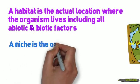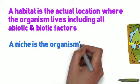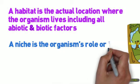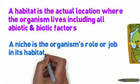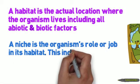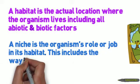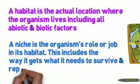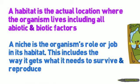A niche is different from a habitat. A niche is the organism's role or job within its habitat. This includes the way it gets what it needs to survive and reproduce, like how it gets its food, how it gets away from predators, or how it reproduces. So when you think of a niche, think of how an organism lives in its habitat.